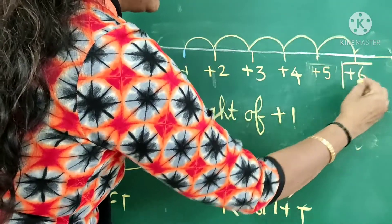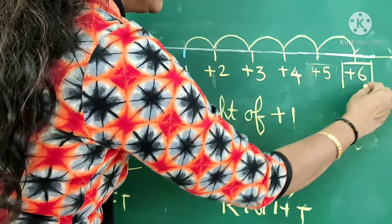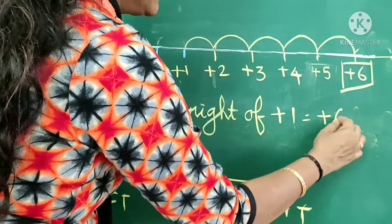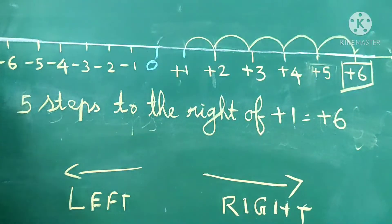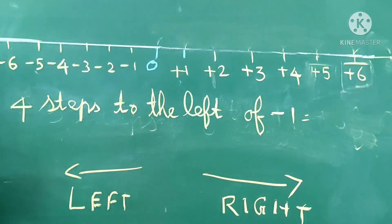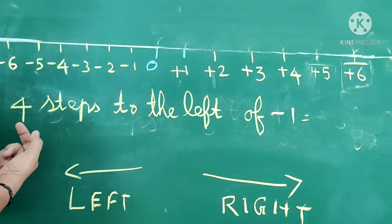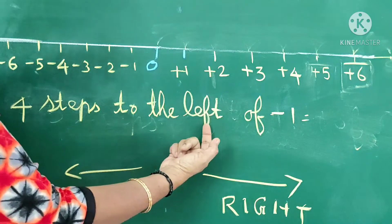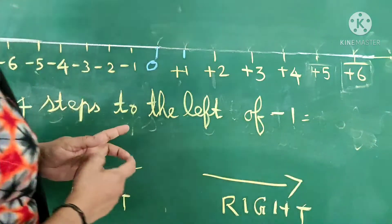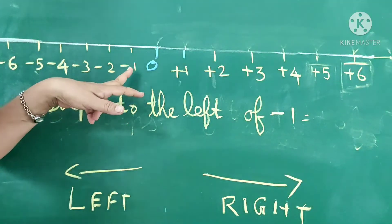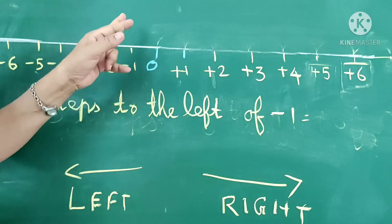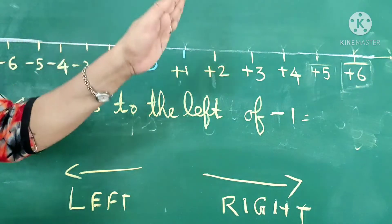The answer is positive 6. Shall we go to the next example? Next example: 4 steps to the left of minus 1. Where is minus 1? Negative 1 is here. So we should move to the left side, not the right side.